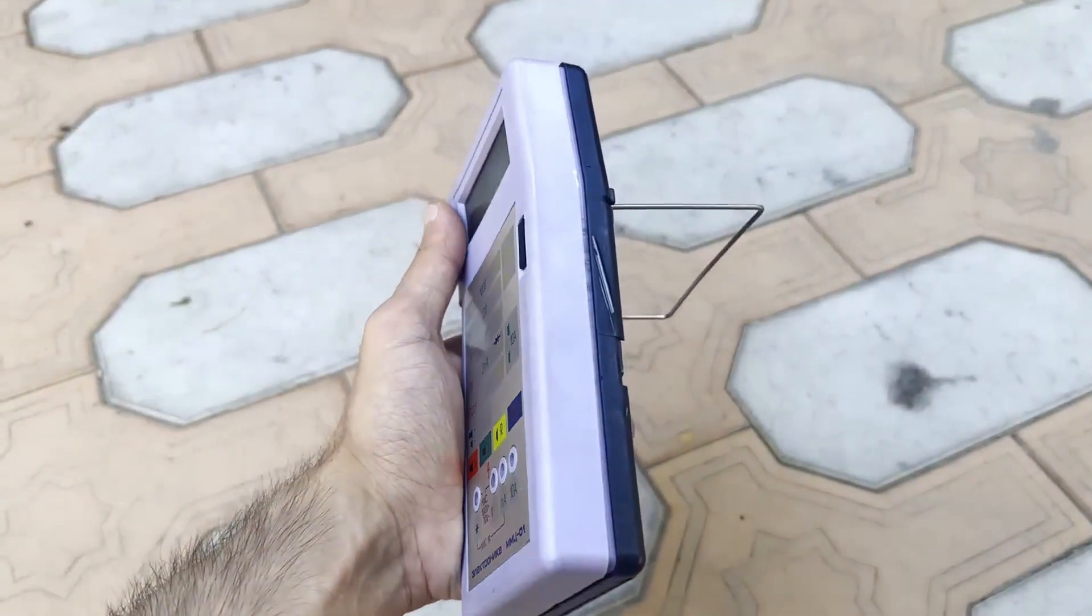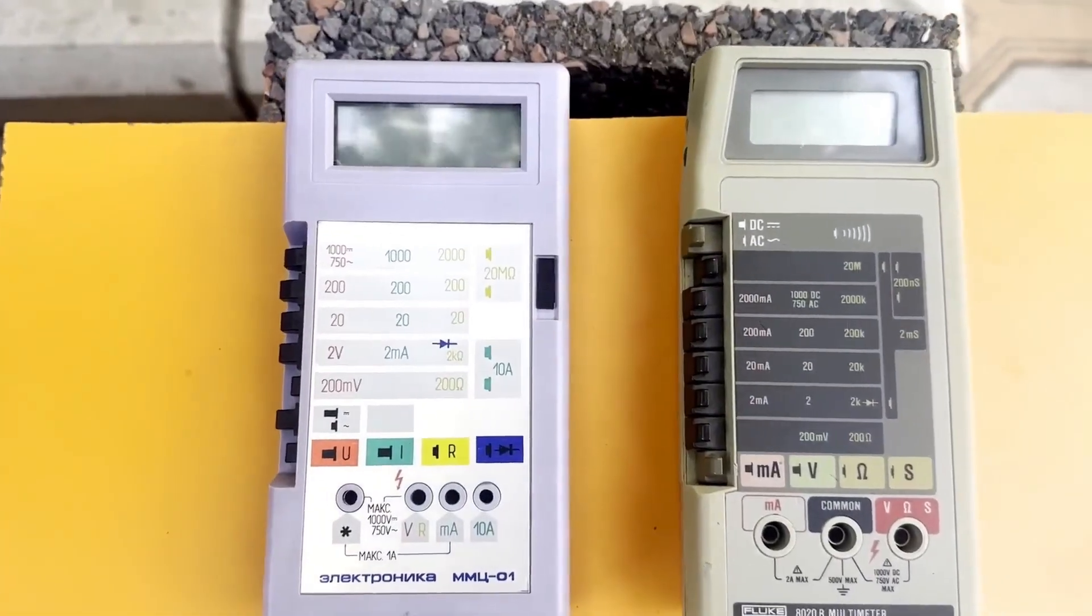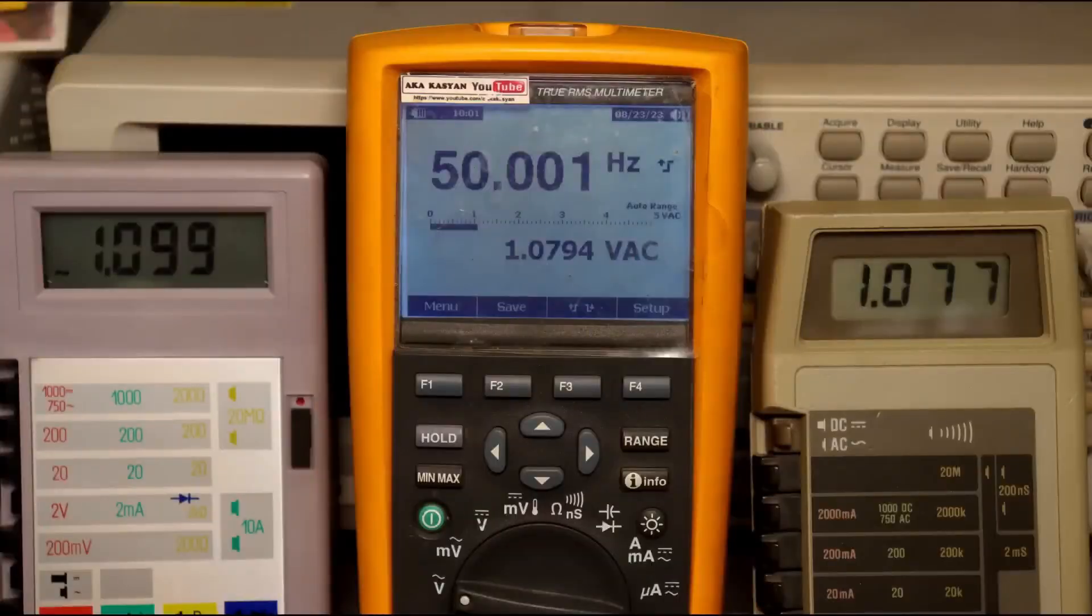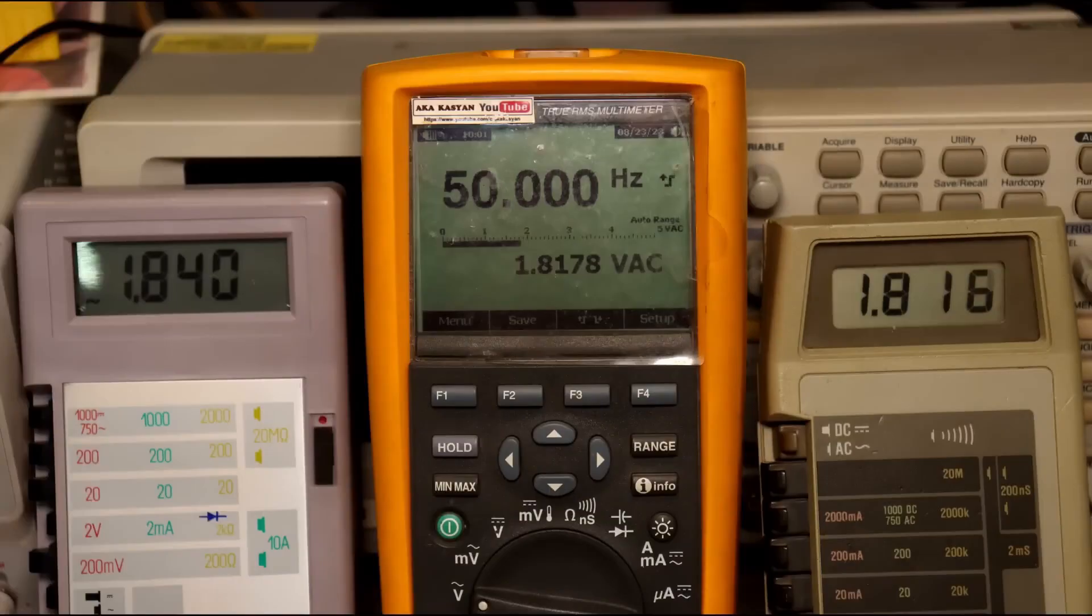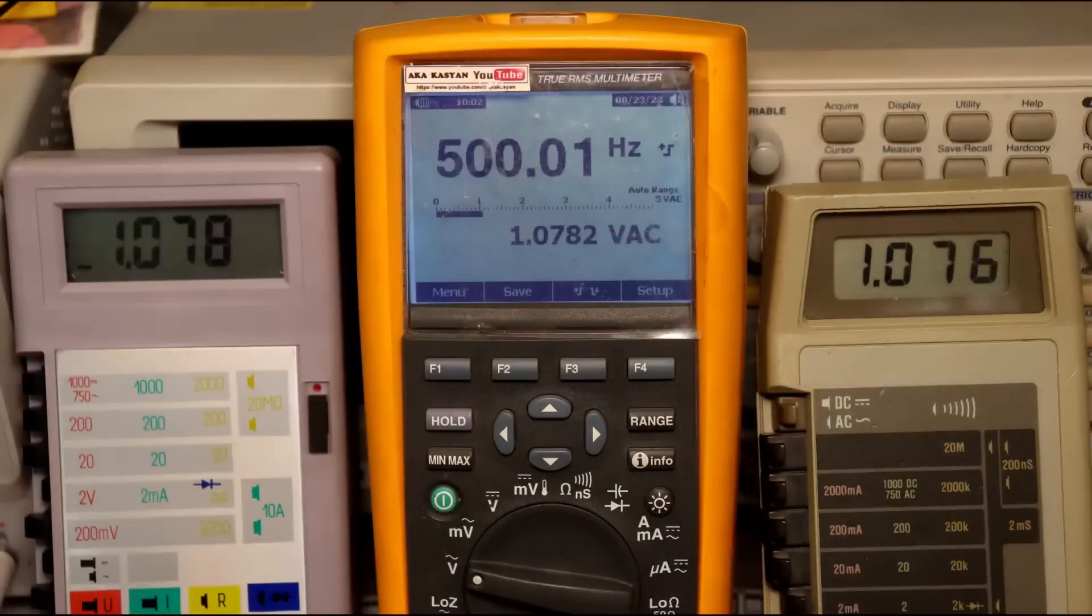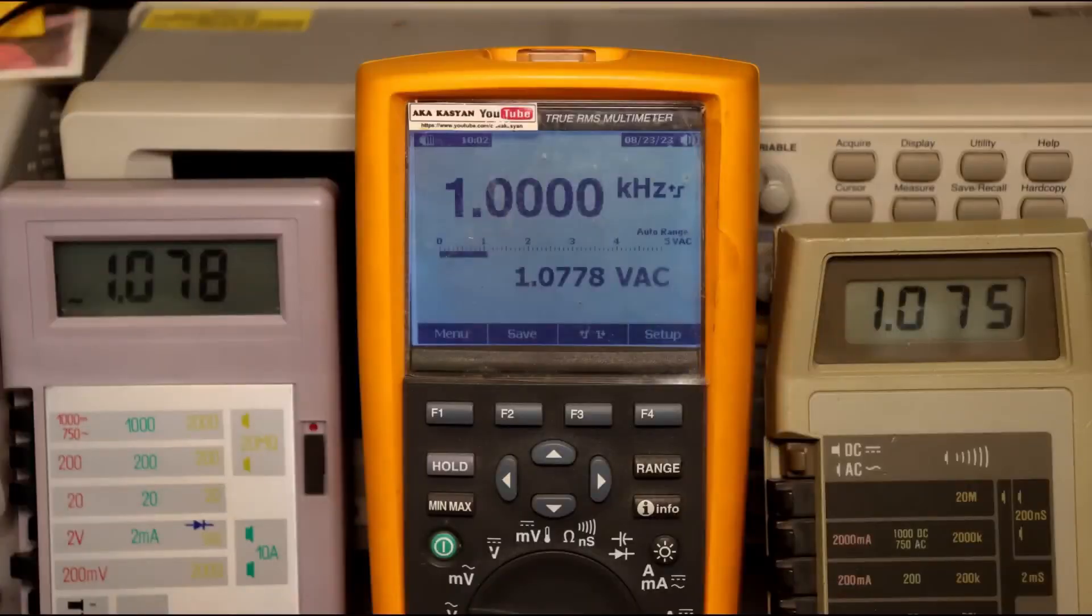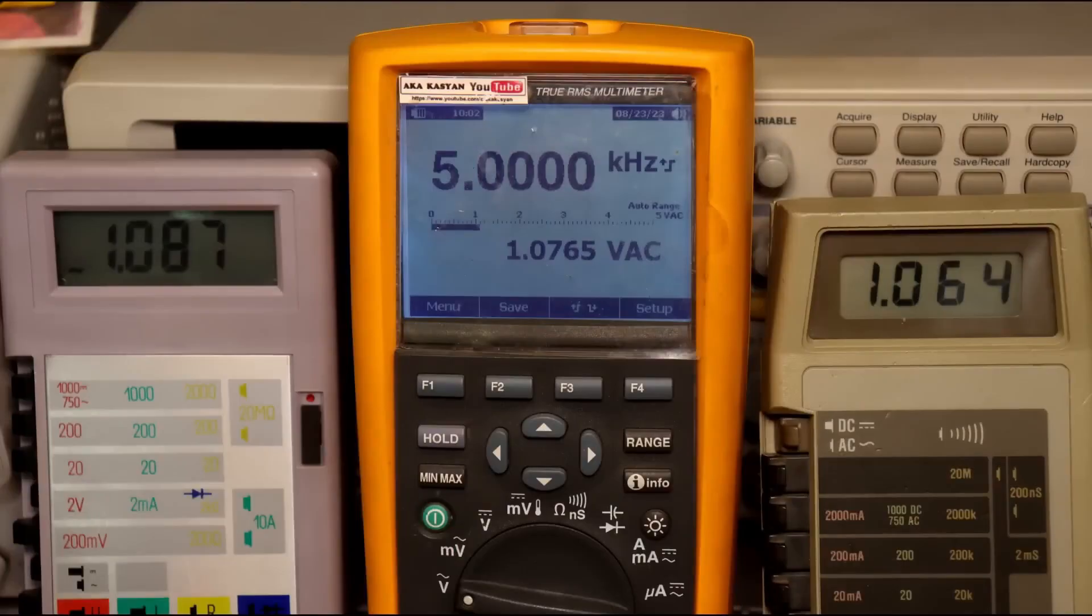Didn't expect, right, that the electronics would be no worse than Fluke, but the fact is clear. AC voltage sine wave at 50 Hz. AC voltage sine wave at 500 Hz. AC voltage sine wave at 1 kHz.